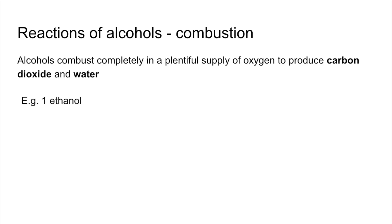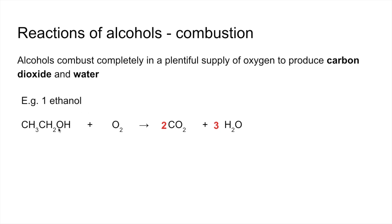The first example is ethanol. Starting with the unbalanced equation, we balance the carbons first, so we need two CO2s. Then the hydrogens, so we need three H2Os. Then back to the oxygens — remember there's an oxygen in the alcohol, which students quite often forget. Altogether we've got four plus three, seven oxygens on the right; there's one in the alcohol, so we need another six, giving us three O2s.